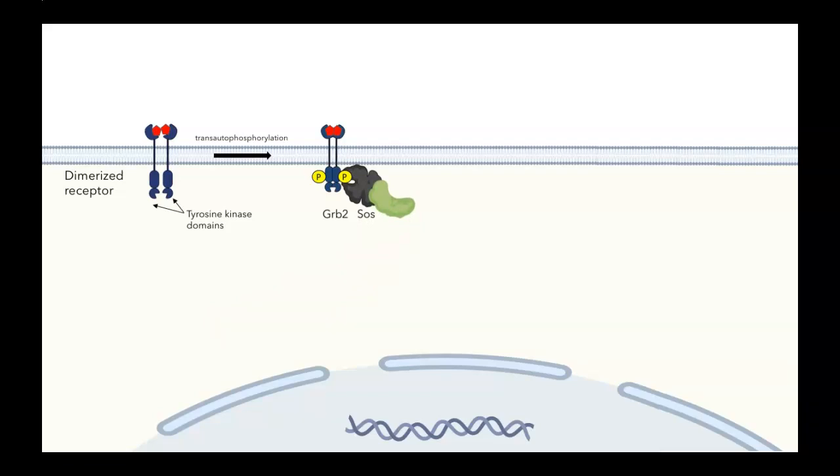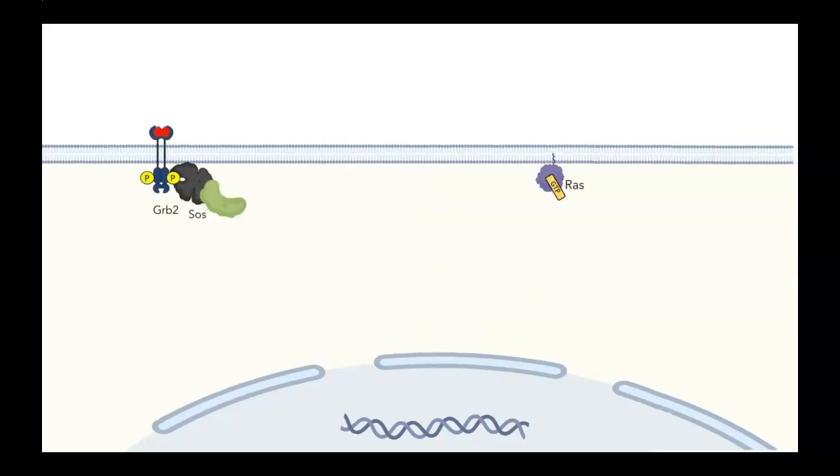Son of sevenless is a guanine exchange factor. It's going to promote the exchange of GTP for GDP, and its target is a small G protein called RAS. RAS is a small monomeric G protein. These proteins belong to a different family than the heterotrimeric G proteins we've seen associated with GPCRs. The biggest difference is that there's a single subunit. But like those other G proteins, they can bind to either GDP or GTP. When they're bound to GDP, they tend to be inactive. They can be activated if they exchange that, and that's where son of sevenless comes in. Once son of sevenless is brought up to the membrane, there's a high likelihood it will see RAS, which is tethered at the membrane. Once the two proteins interact, that will prompt the exchange of GTP for GDP, and that activates RAS.